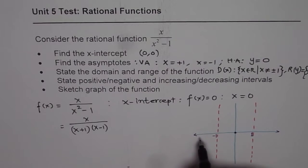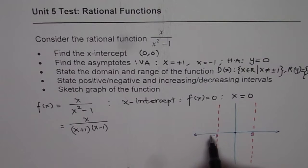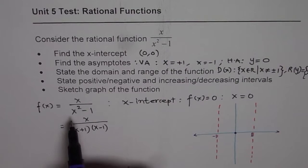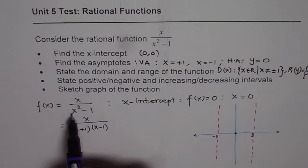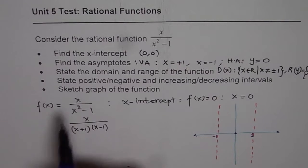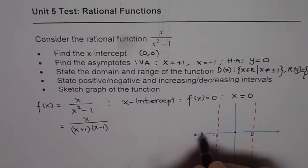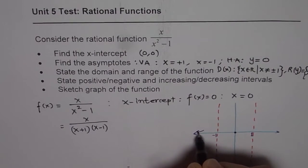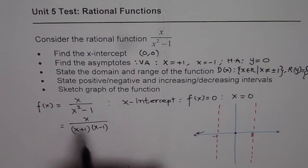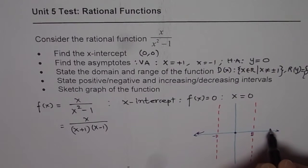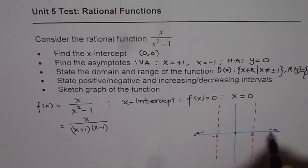Now it is important to check how we are approaching the horizontal asymptote. If we use a large negative value like minus 1,000, the square is positive so we get a positive numerator overall — wait, we need to reconsider. If x equals plus 1,000, we are also approaching from the positive side.